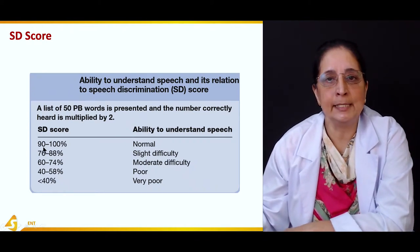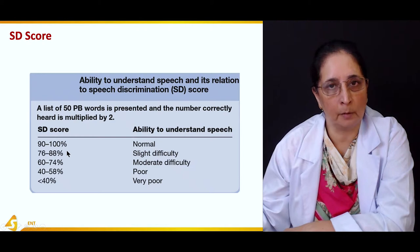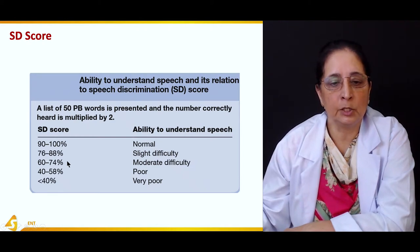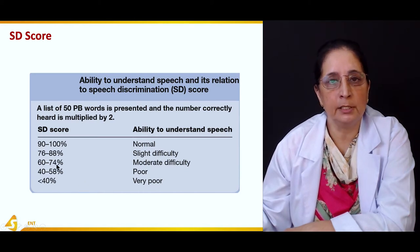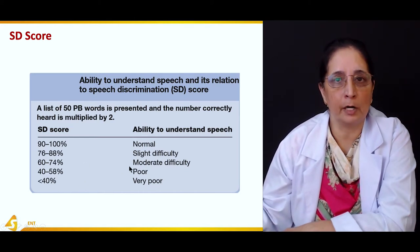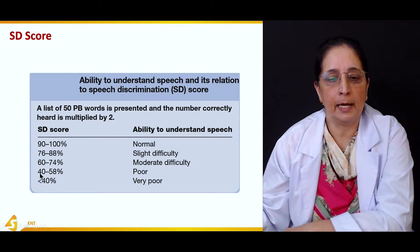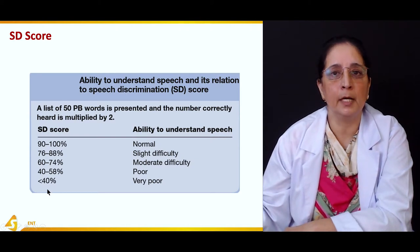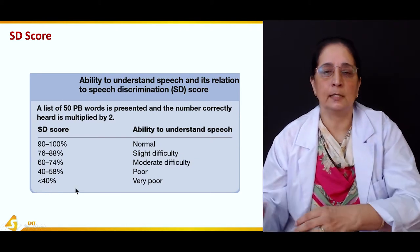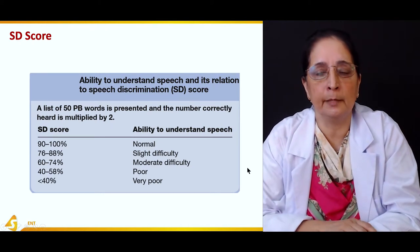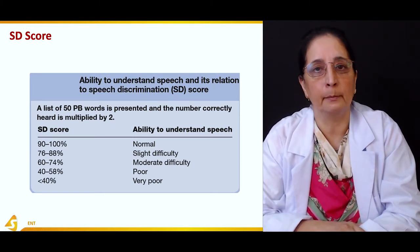The scoring ranges for speech discrimination are: 90–100% is normal; 76–88% is slight difficulty; 60–74% is moderate difficulty; 40–58% is poor; and less than 40% is very poor.